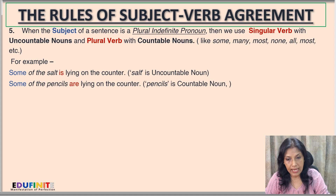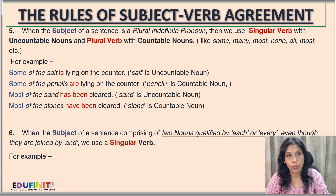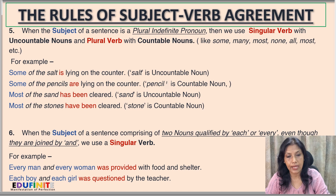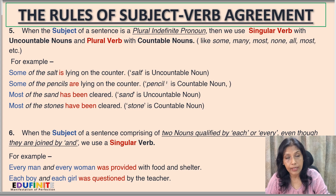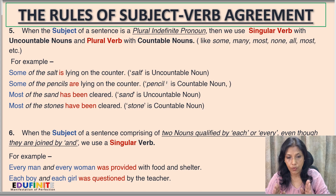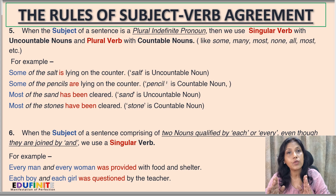Rule number five: when the subject of a sentence is a plural indefinite pronoun — like some, many, most, none, all — we use a singular verb with uncountable nouns and a plural verb with countable nouns. For example: 'Some of the salt is lying on the counter' — salt is uncountable, so we use 'is'. But: 'Some of the pencils are lying on the counter' — pencils is countable, so we use 'are'.